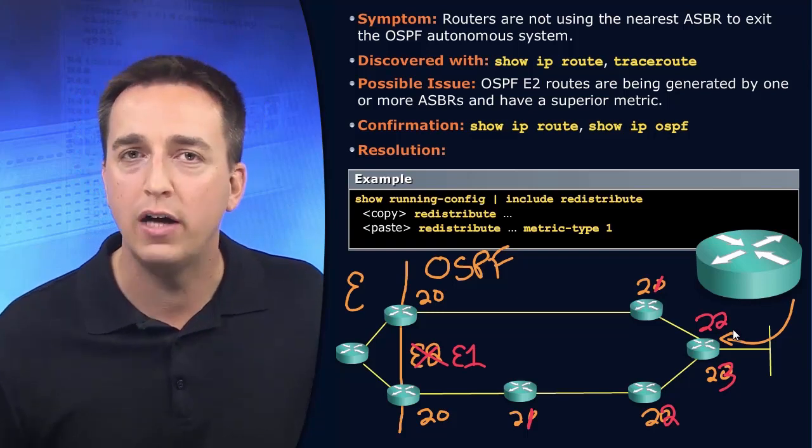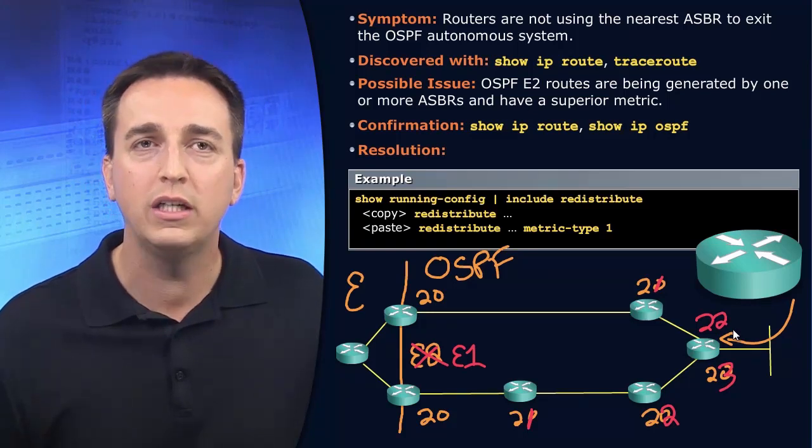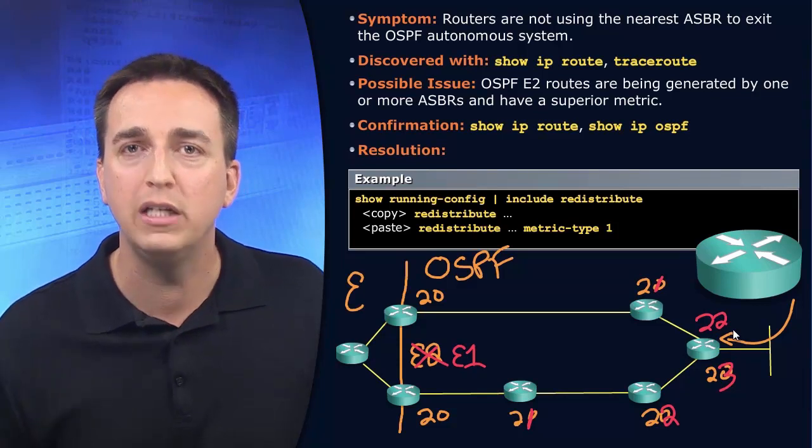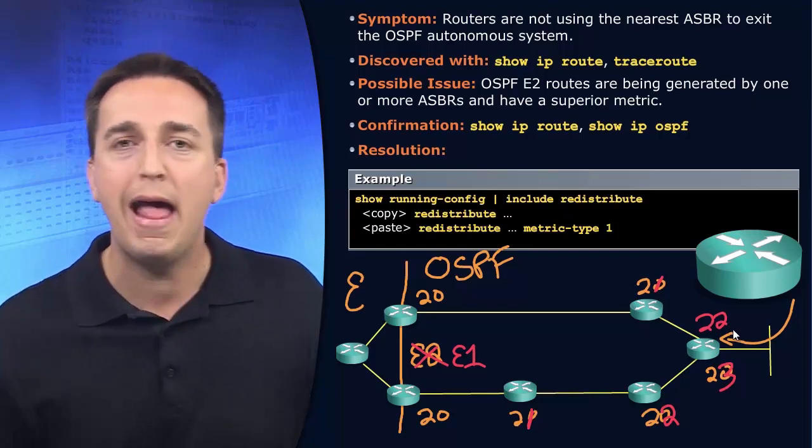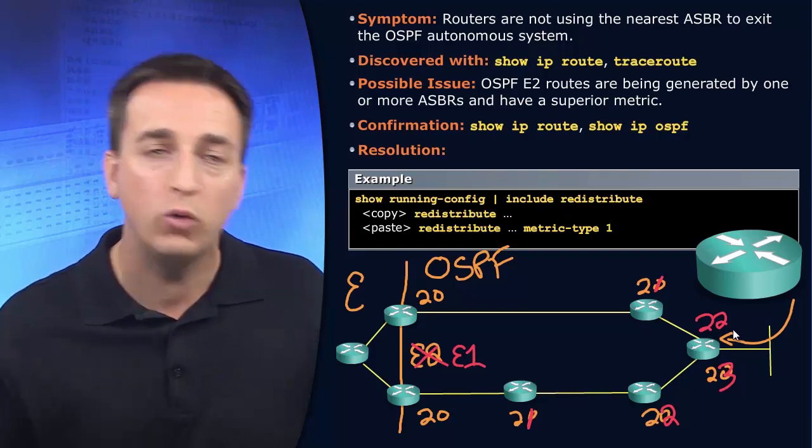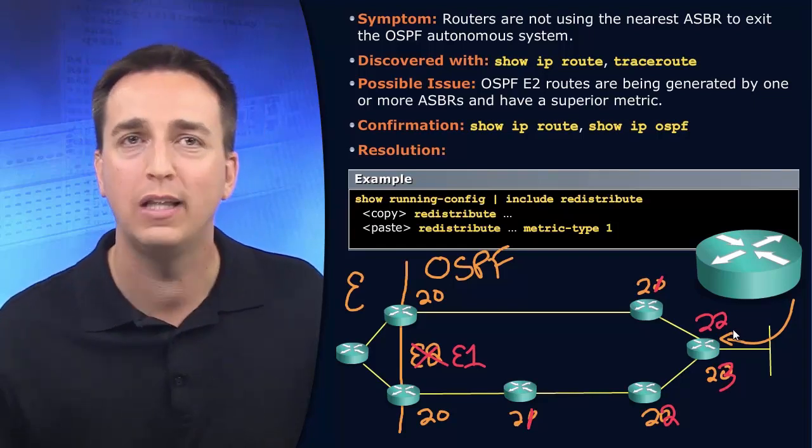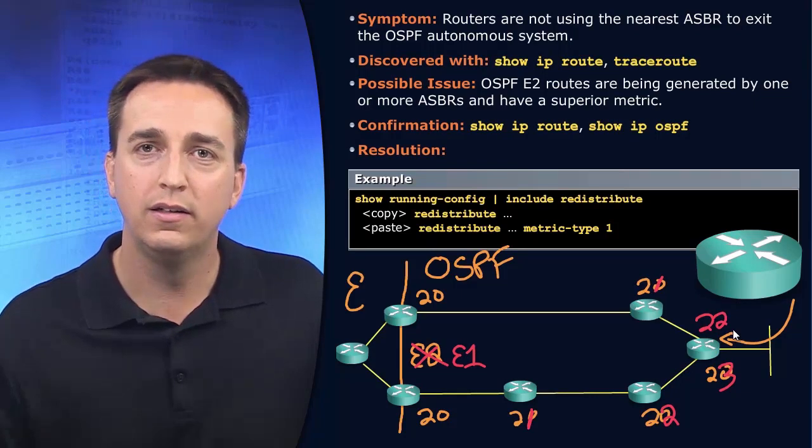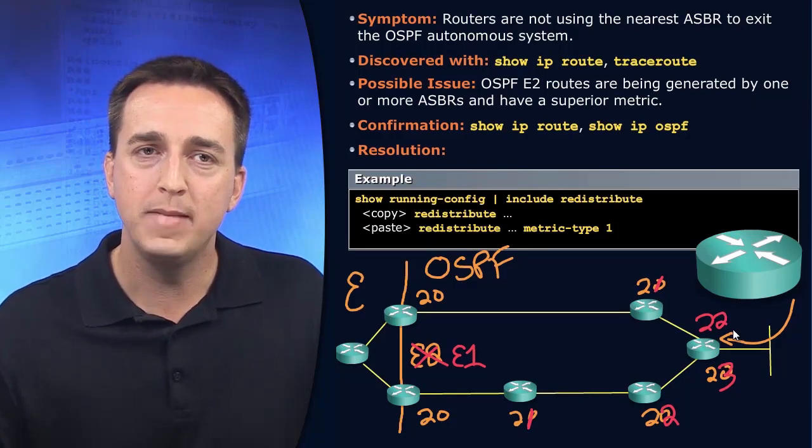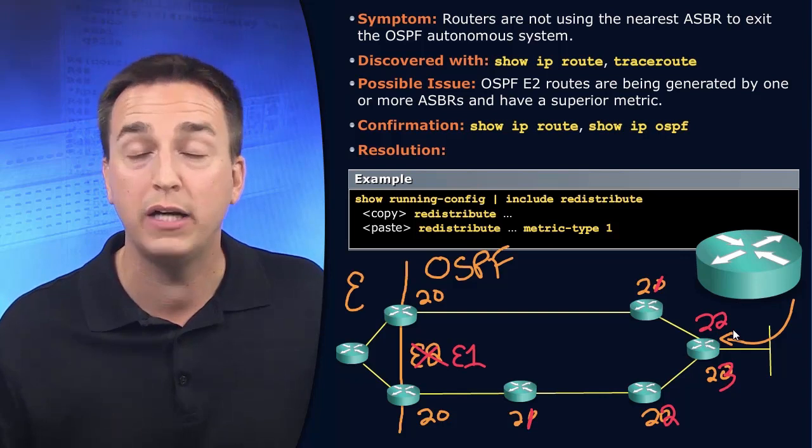Look at all the different costs using commands such as show IP route to see what is the route that's being used. What's the next hop? Look at the paths using trace route to see which path is truly being utilized. And then modify those metric types if you have to.